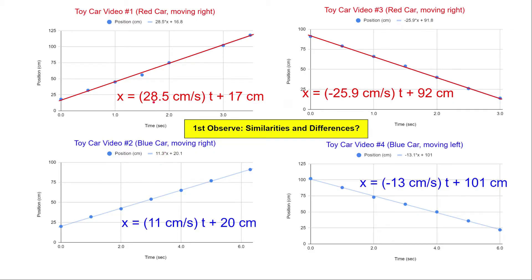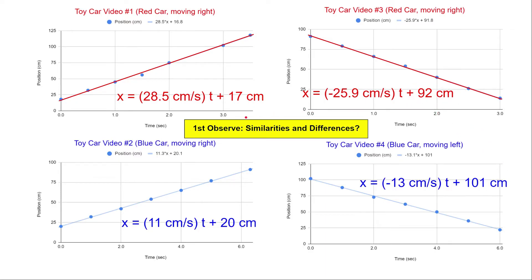Looking at the top graphs, one has a slope of 28.5 centimeters and the other has a slope of negative 25.9 — the sign is different but the value of the slope is approximately the same. Similarly, looking at the bottom graphs, the values of those slopes are about the same: 11 centimeters per second compared to 13 centimeters per second, which is close compared to the slopes up top. Another similarity is the y-intercepts: car 1 and car 2 have pretty similar y-intercepts of 17 centimeters and 20 centimeters. The y-intercept is where the graph intersects the y-axis — in this case our position axis.